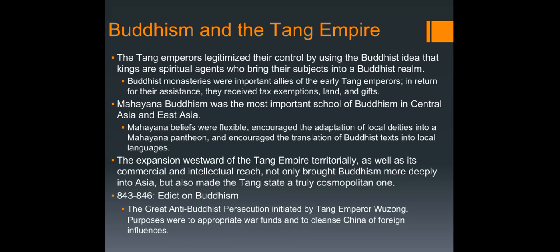The Tang emperors legitimized their rule using the Buddhist idea that kings were spiritual agents. The monasteries were important allies in the early Tang period — in return for supporting the king and helping explain how Buddhism served the people, monasteries were tax-exempt and received land and gifts from the king.